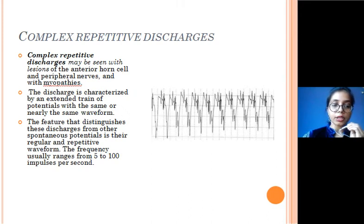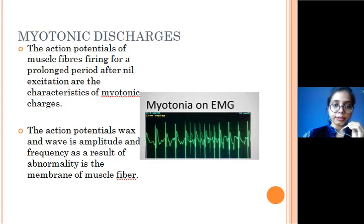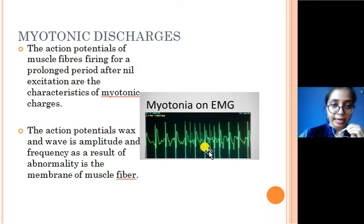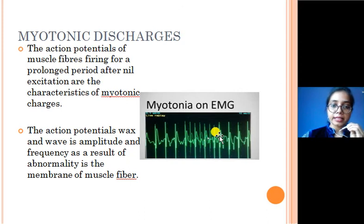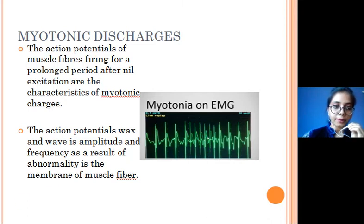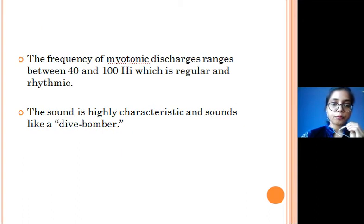The next type is myotonic discharges. As you can see here, their peculiar characteristic is that even after the stimulus that produces excitation ceases, the muscle fiber continues to fire. They have a waxing and waning pattern in amplitude — that is, an increasing or decreasing pattern — sometimes representing abnormality in the membrane of the muscle fibers. The frequency is 40 to 100 hertz, which is regular and rhythmic, and the characteristic sound is like a dive bomber or bomb explosion.